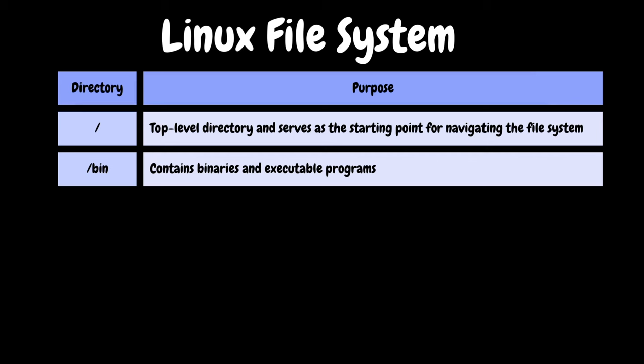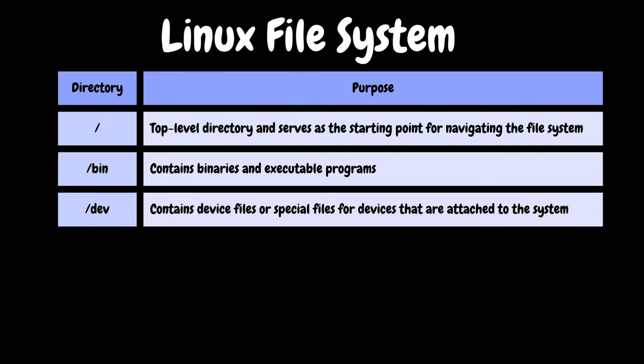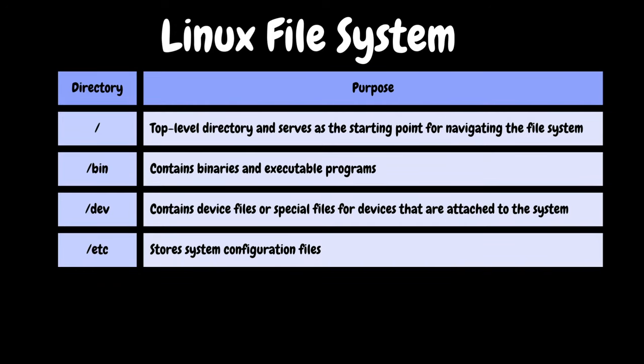The root directory, denoted by a forward slash, is the top-level directory and serves as the starting point for navigating the file system — from there, directories branch out creating a structured and organized system. The bin directory contains essential executable files required for basic system functionality. The dev directory contains device files, including terminal devices, USB, or any devices attached to the system. The etc directory stores system configuration files — whenever any new application is installed, the configuration files are kept here by default, so if you want to review any application configuration, this is the location to look.